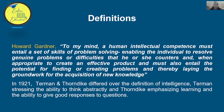When we talk about Terman's contribution, he has differed over the definition of intelligence. Terman stresses the ability to think abstractly — abstract thinking is the key ability for intelligence according to Terman. Thorndike, on the other hand, emphasizes learning and the ability to give good responses to questions.